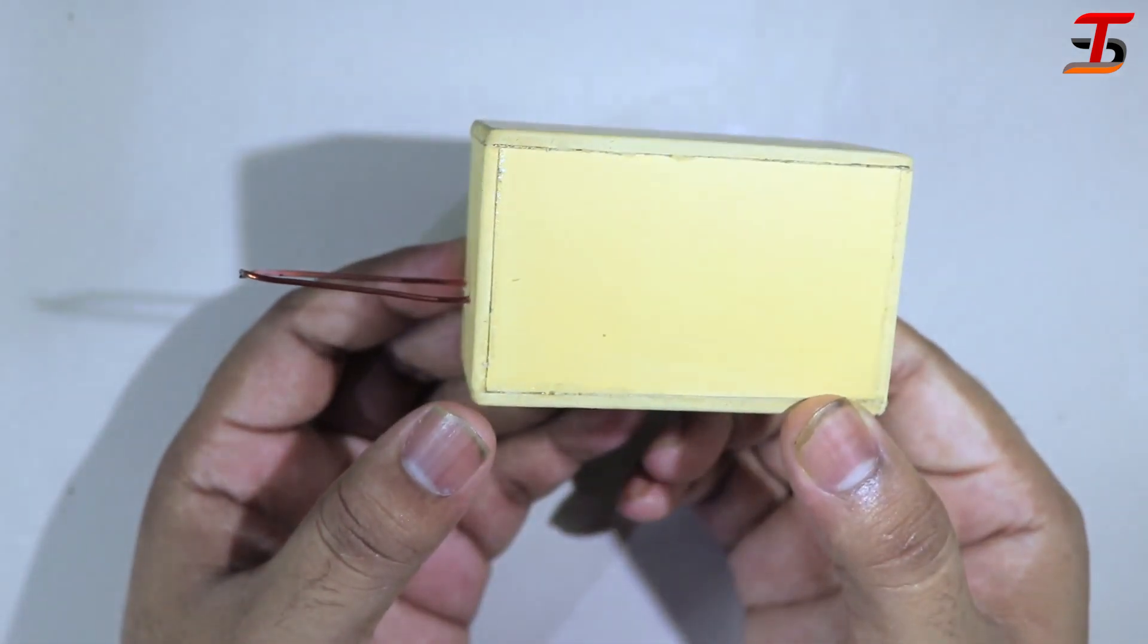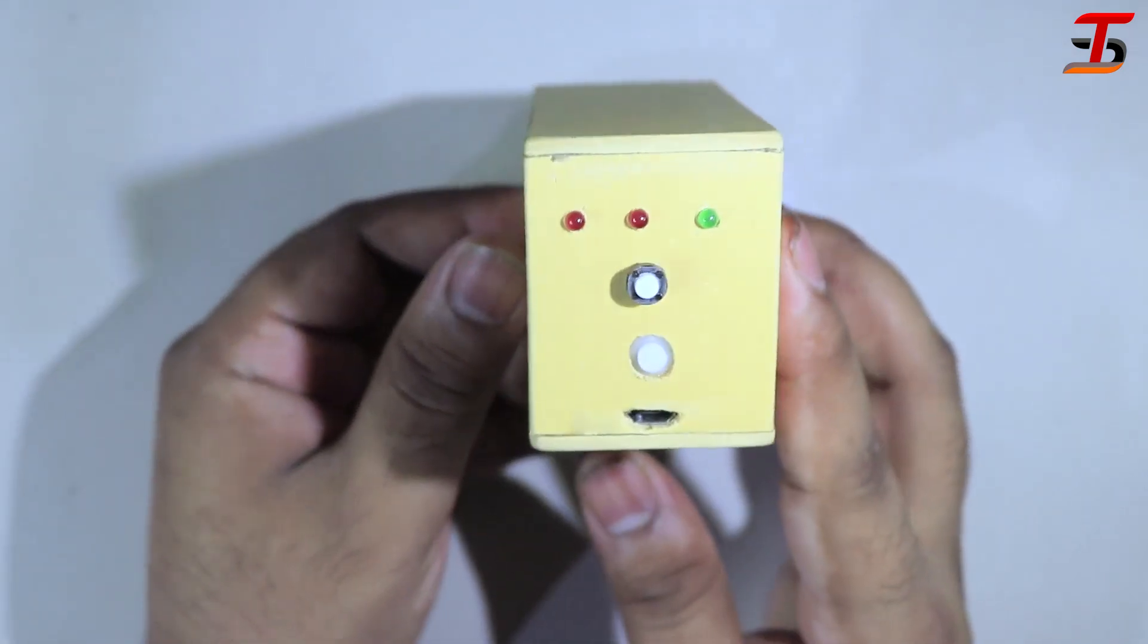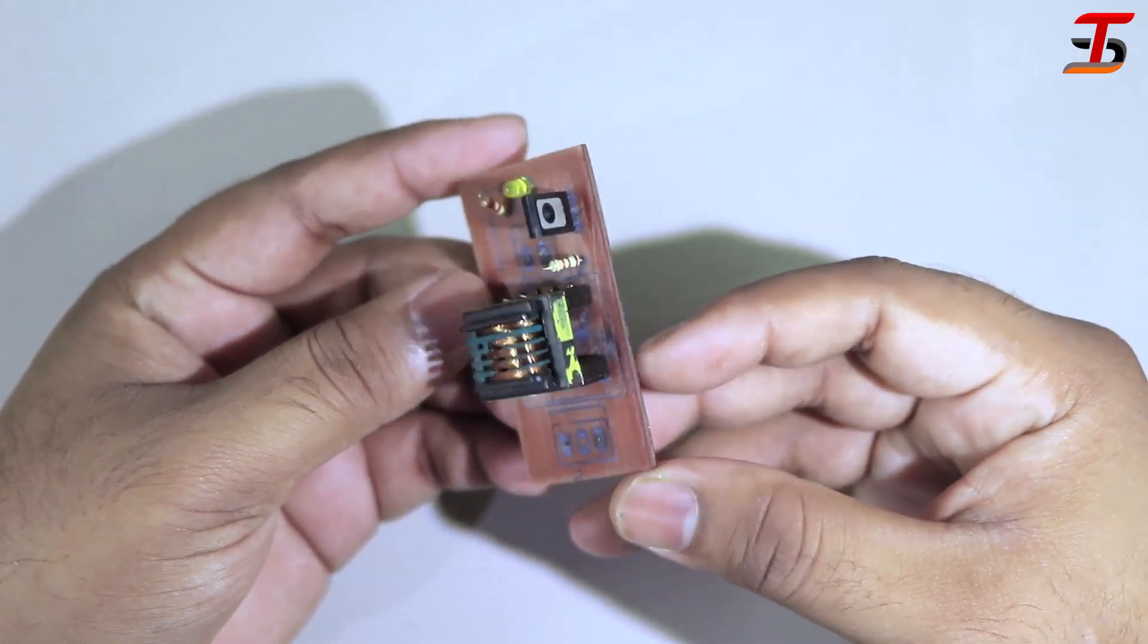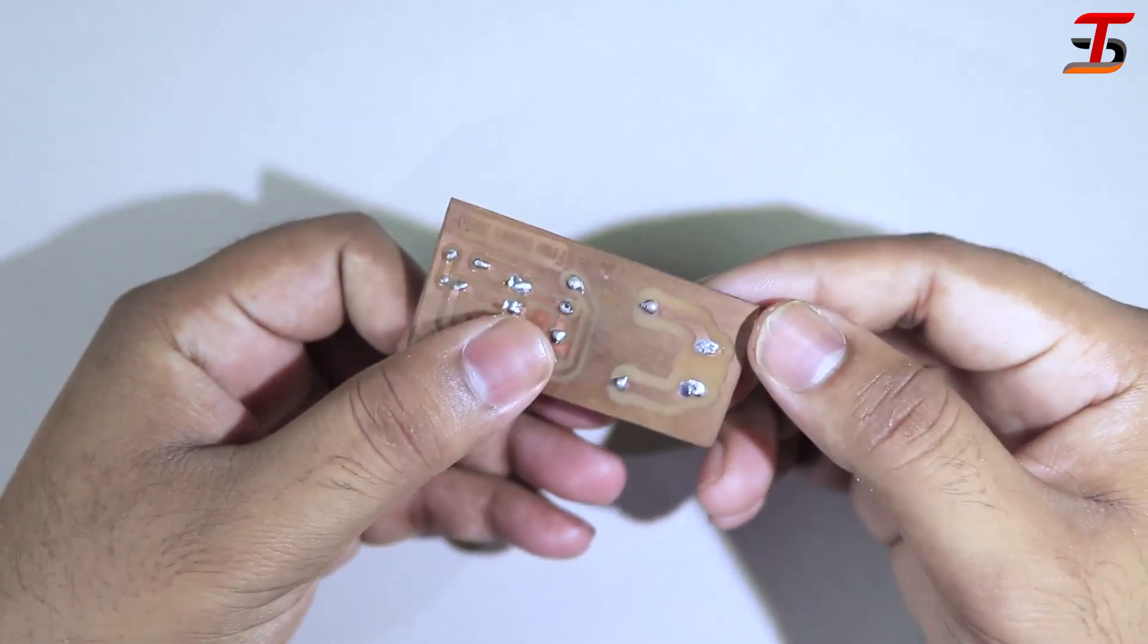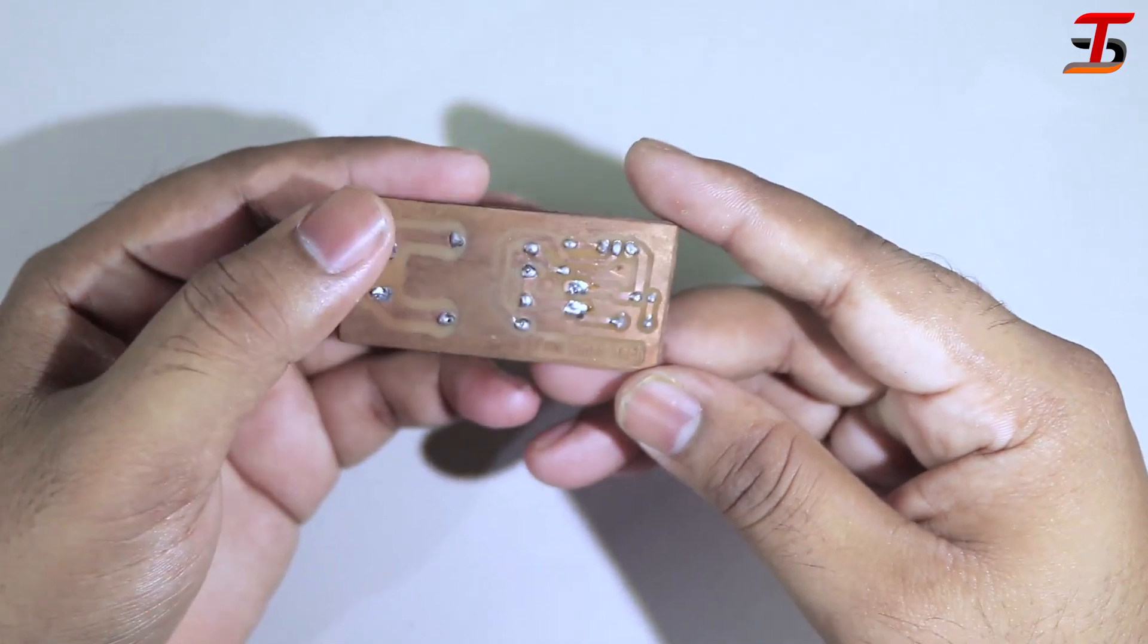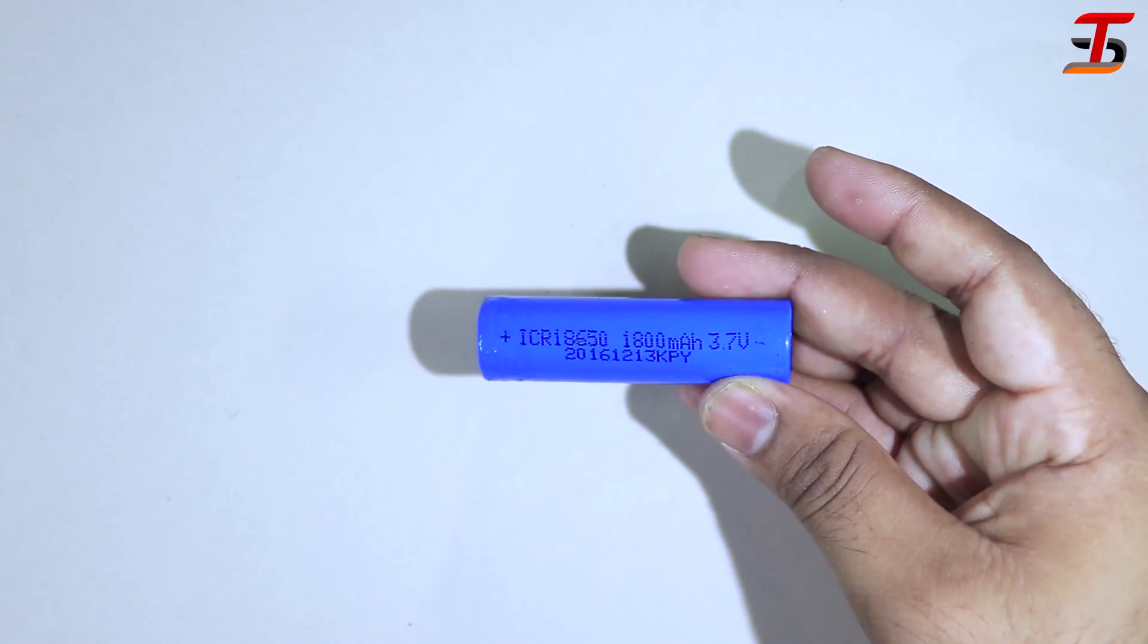After making it, it looks like this. You can see the main circuit of the lighter is here. To see how I made the circuit, please check the description link. It's a 3.7 volt lithium-ion battery.